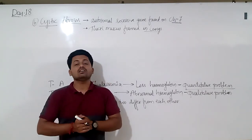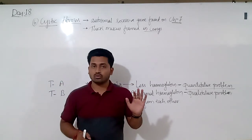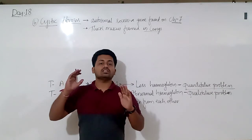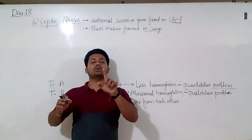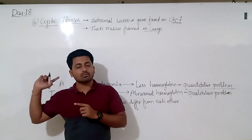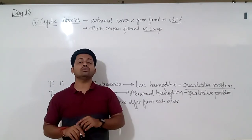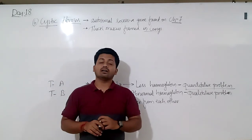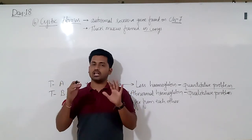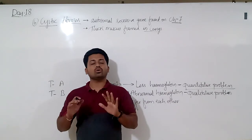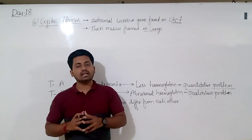This completes our discussion on Mendelian disorders — disorders caused due to single gene mutations. The second type of genetic disorder is chromosomal disorder, which we will continue in the next class. Please watch these videos carefully, ask doubts in the college application, and read well. Thank you.